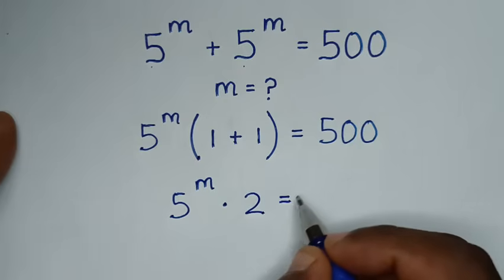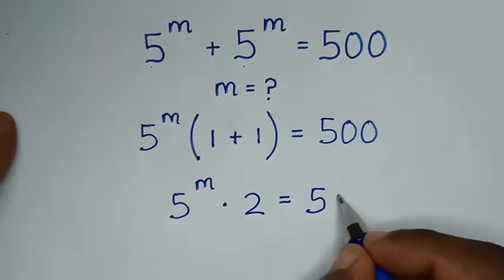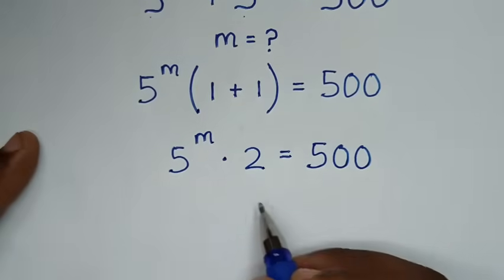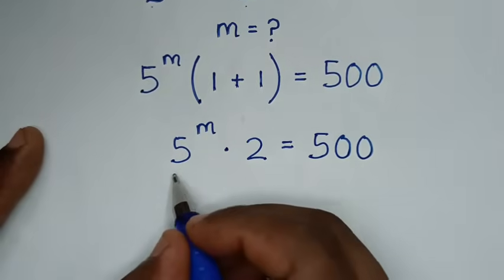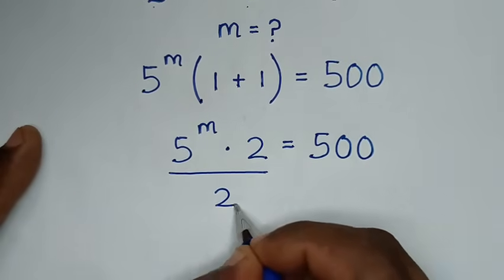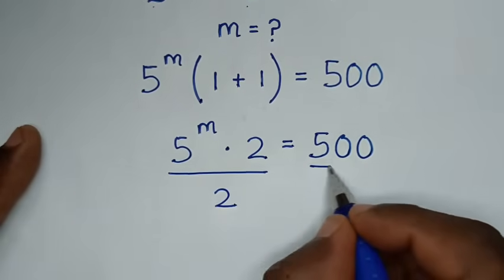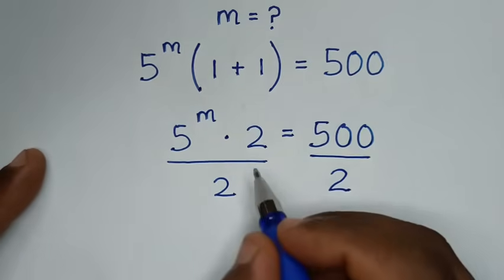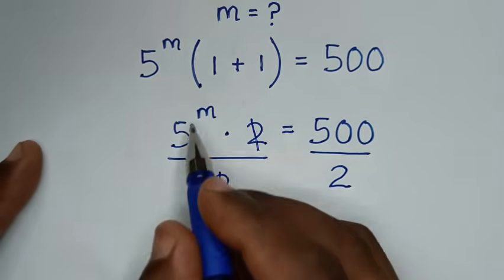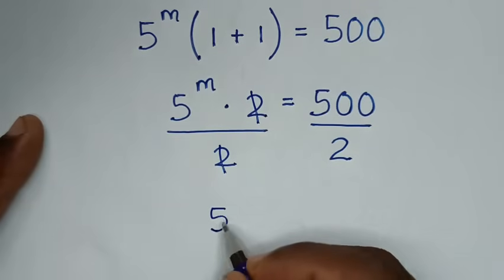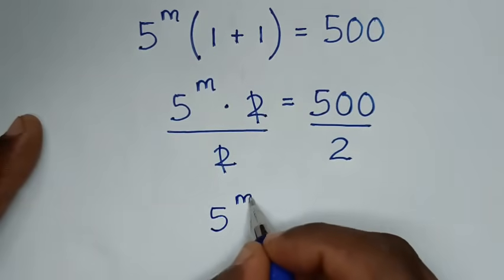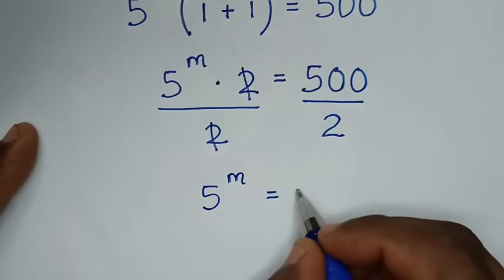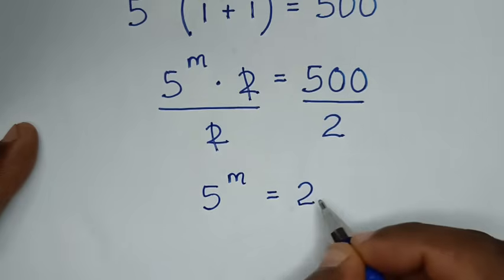This is equal to 500. Then we will divide by 2 on both sides. We cancel the 2, and it will be 5 power of m is equal to 500 divided by 2, which is 250.